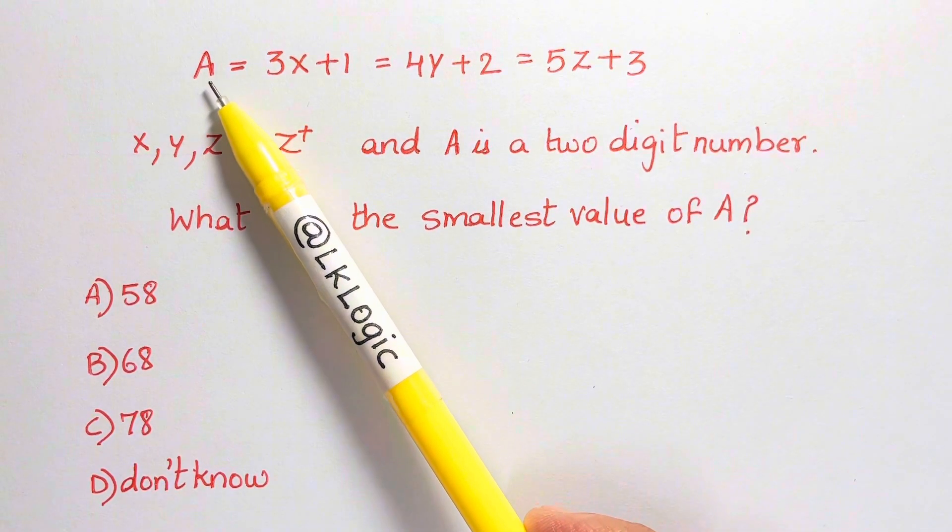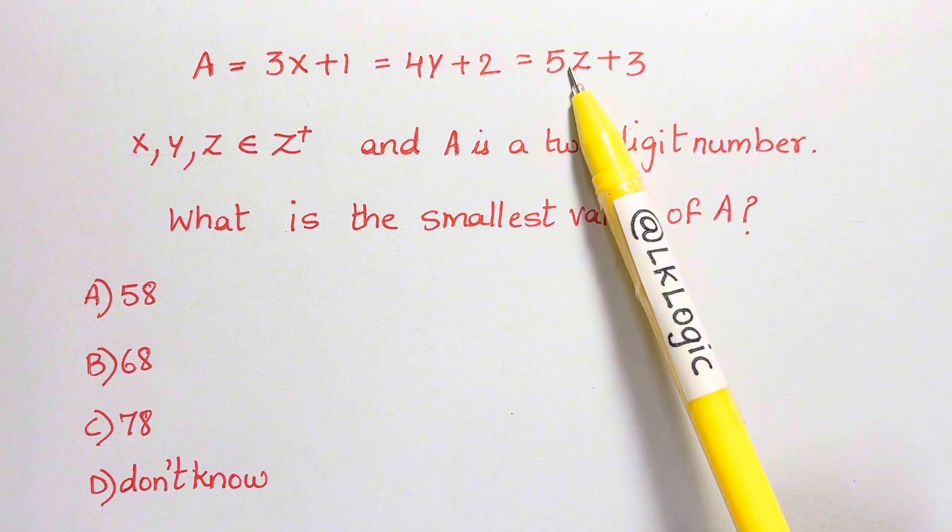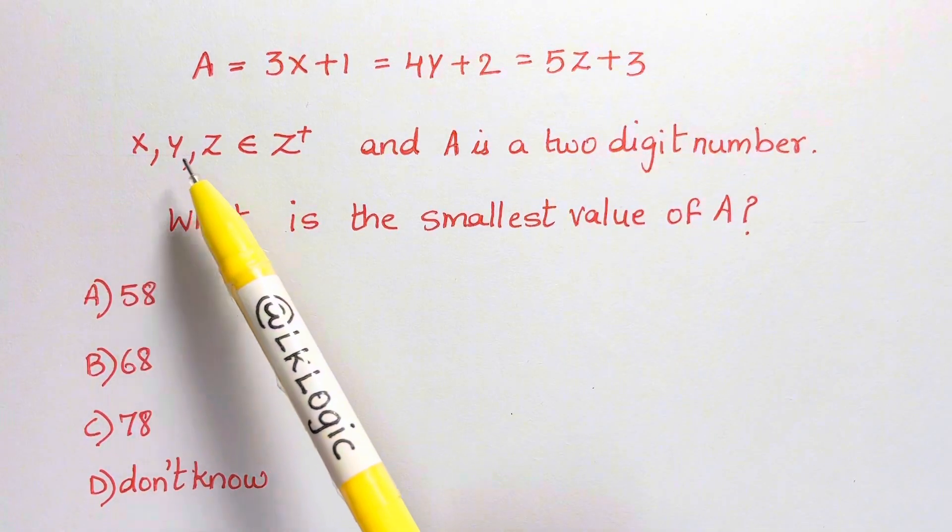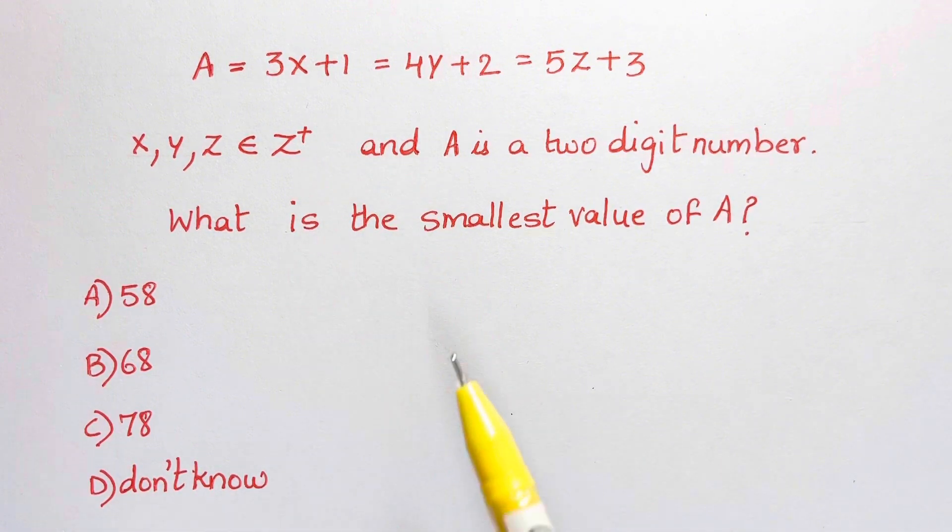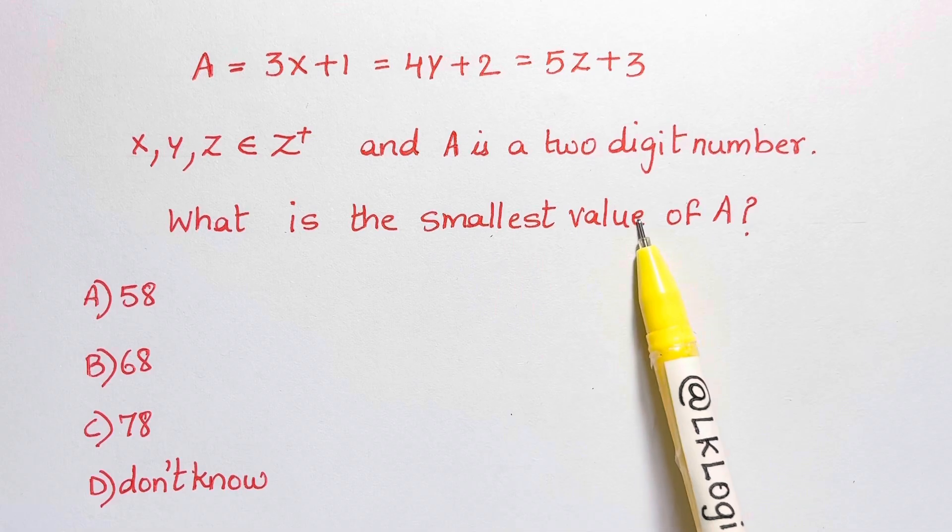Hi guys, here we have a question: A equals 3x plus 1, also equals 4y plus 2, also 5z plus 3. And x, y, z here are positive integers, and A is a two-digit number. What is the smallest value of A?